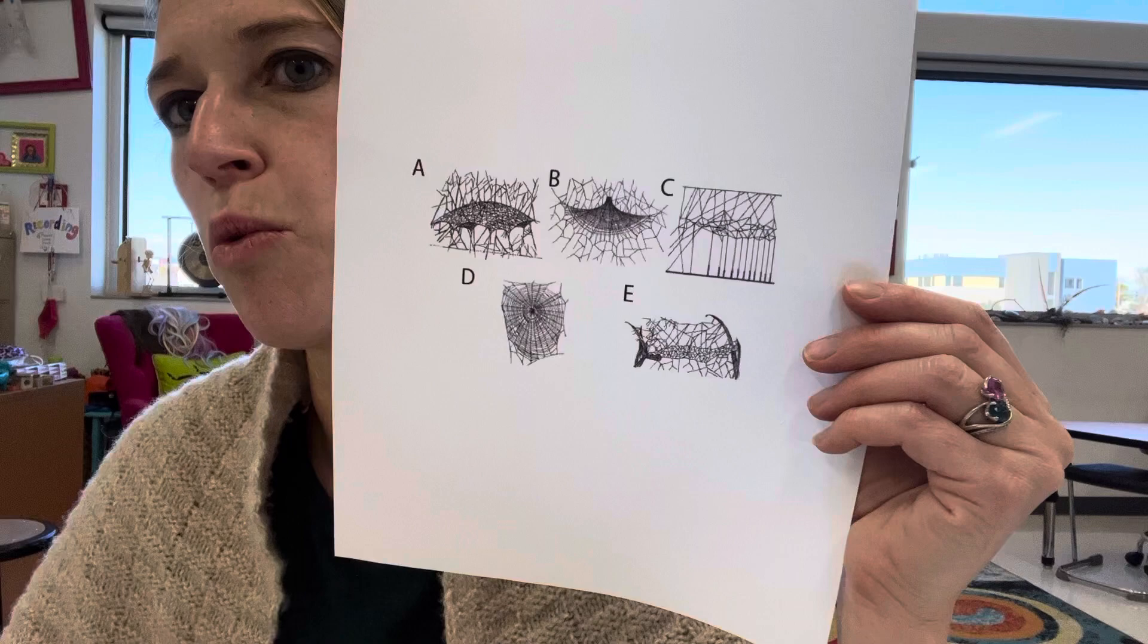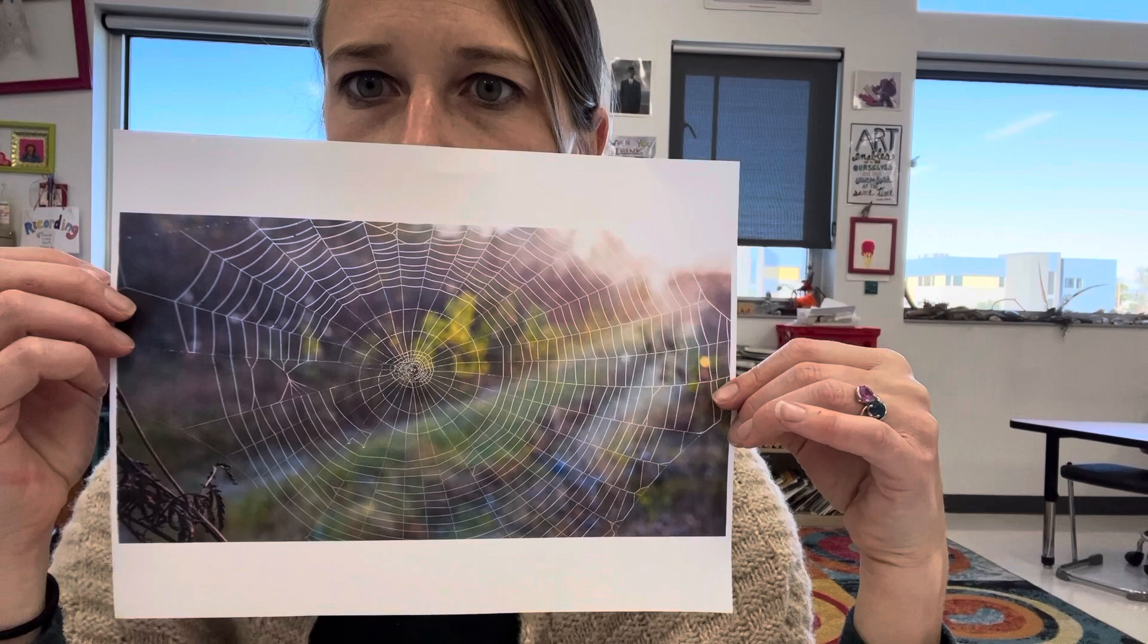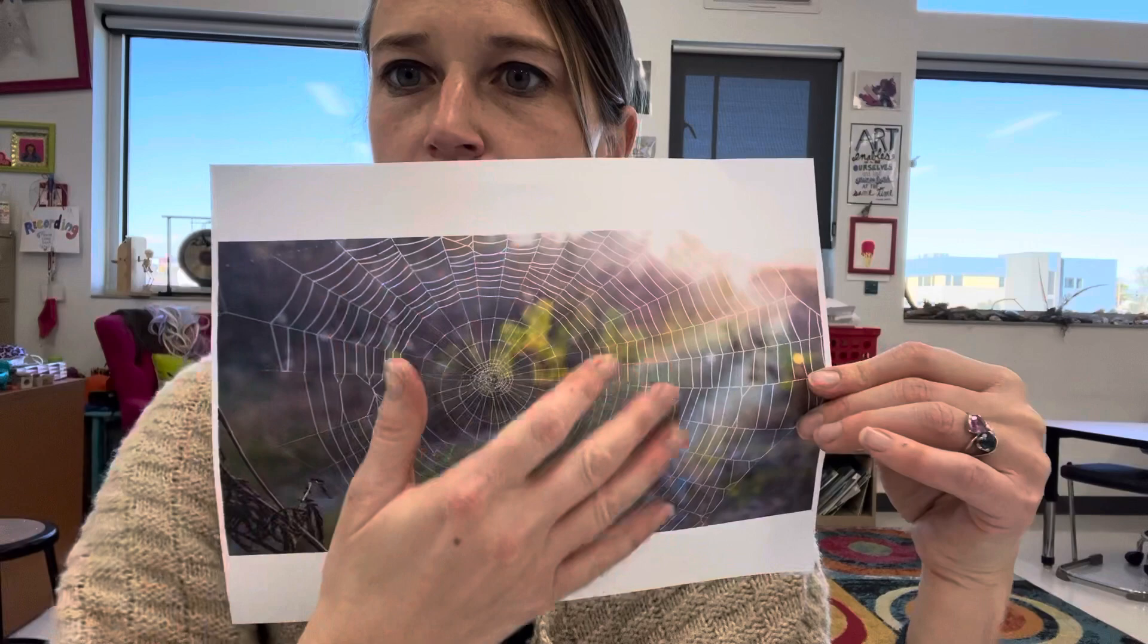Okay, and primarily what most people draw are orb webs, which is this kind of web right here. I printed off a few pictures of spider webs because, like I said, they are really quite beautiful. And if you find a spider web and the light is hitting it just right, you can really see the full design.